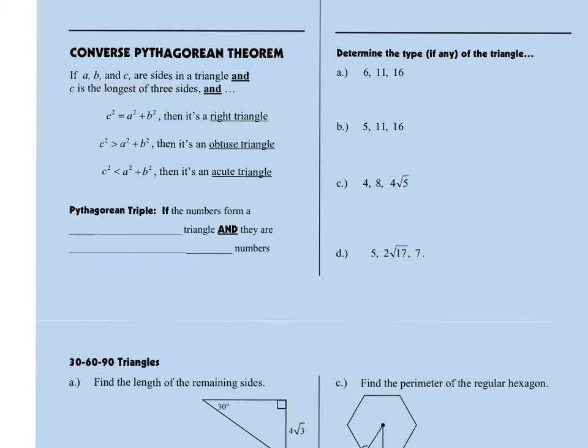So if we can find that our c squared actually equals the sum of the squares of the other two sides, it'll be a right triangle. If we can find that the c squared value is more than the sum of the squares of the other two values, it'll be obtuse, and less than it will be an acute triangle.